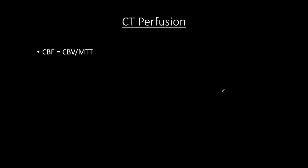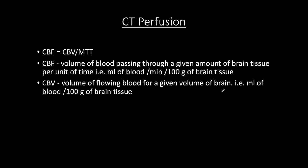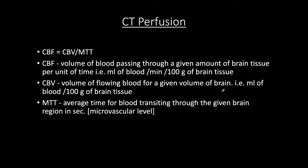CT perfusion will be our main focus. The key formula is: cerebral blood flow equals cerebral blood volume divided by mean transit time. Cerebral blood flow is the volume of blood passing through a given amount of brain tissue per unit of time — measured in mL per minute per 100 grams of tissue. Cerebral blood volume is the volume of blood for a given volume of brain — mL per 100 grams of brain tissue. Mean transit time is the average time for blood transiting through a given brain region, in seconds, and operates at a microvascular level.